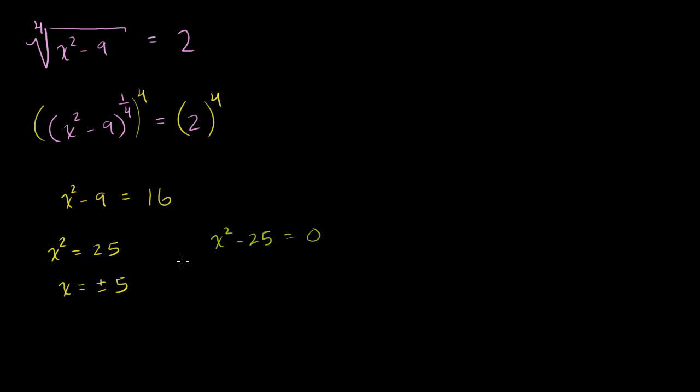So these two are equivalent. This, essentially, we're just moving the 25 onto the left-hand side. We're just subtracting 25 from both sides of this to get that. But what this does is it puts us in the form of a difference of squares. We know we can rewrite this as x plus 5 times x minus 5. We went over that several videos ago. And that will be equal to 0.